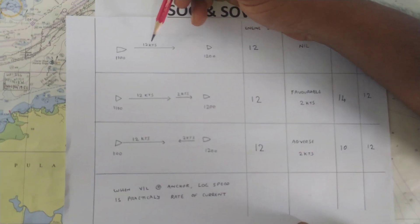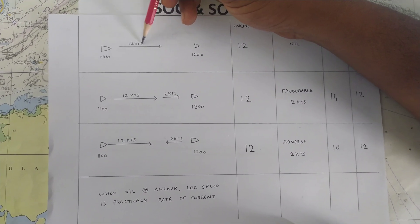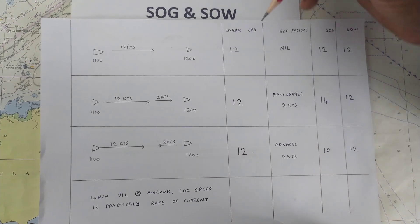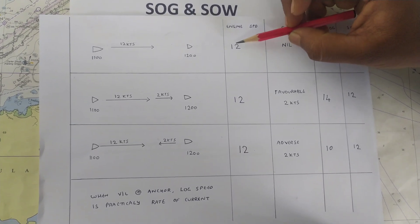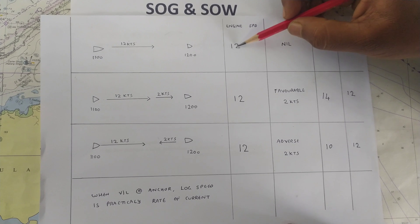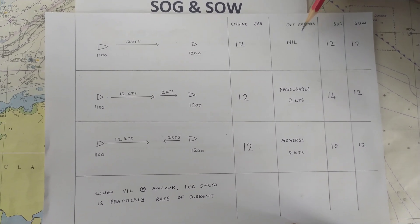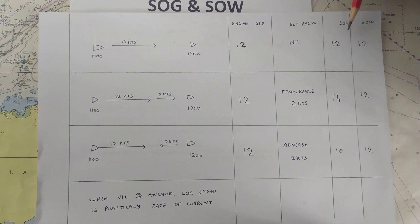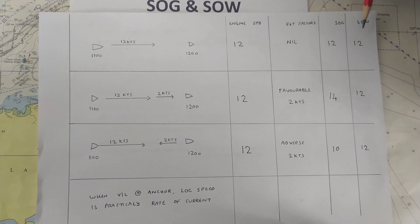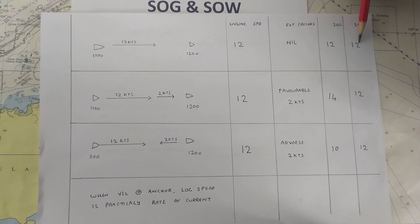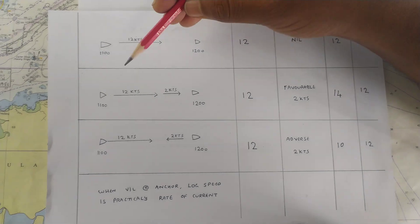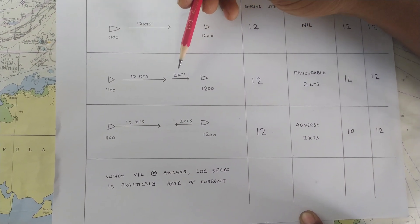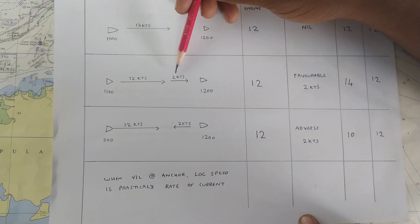In the first situation, the ship has 12 knots engine speed and zero current or wind. So the engine speed is 12 knots — this is basically your log speed. Since the external affecting factors are nil, your speed over ground as well as your speed over water will both be 12 knots.